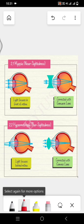First is myopia. In myopia, the light rays focus in front of the retina instead of on the retina. The image is not clear.